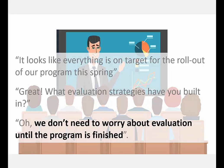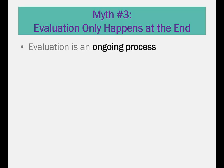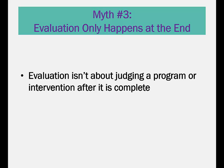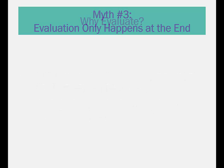Consider the following conversation. It looks like everything is on target for the rollout of our program this spring. What evaluation strategies have you built in? Oh, we don't need to worry about evaluation until the program is finished. Evaluation is an ongoing process that begins as soon as the idea for an injury prevention program is conceived. It is important to fine-tune your initiative at every step of the way. Evaluation isn't about judging a program after it is complete — it should never be viewed as an add-on or optional component.